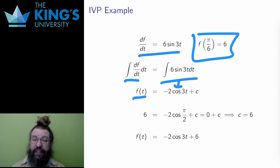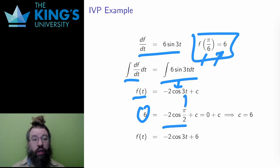Then I need to use an initial condition to determine c. When x is pi over 6, f is 6. So I replace f with 6 and x with pi over 6. The result is 6 on the left, and negative 2 cos pi over 2 plus c on the right. Cos pi over 2 is 0, so that term goes away, and I conclude that c equals 6.